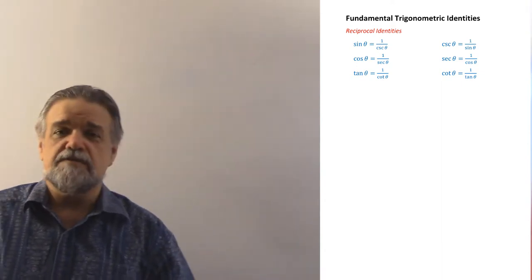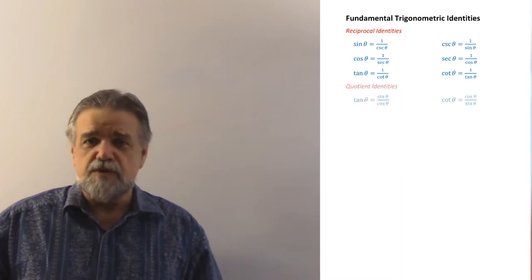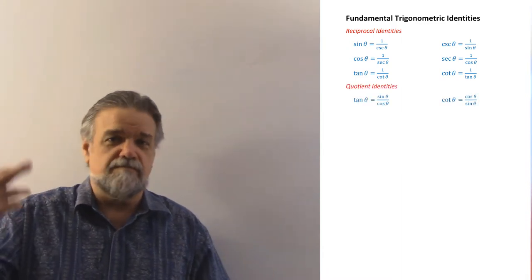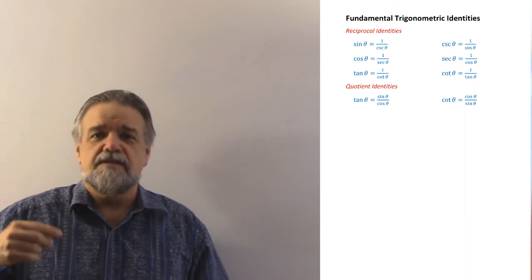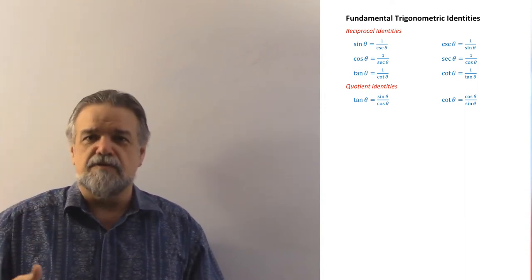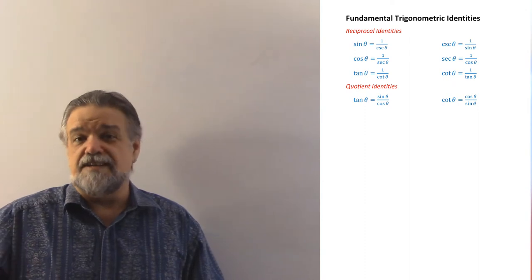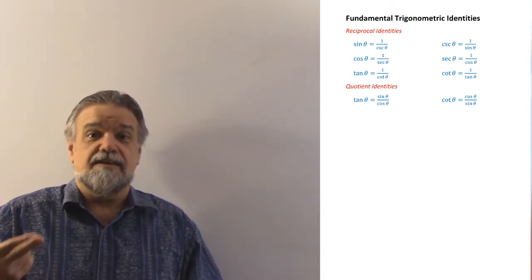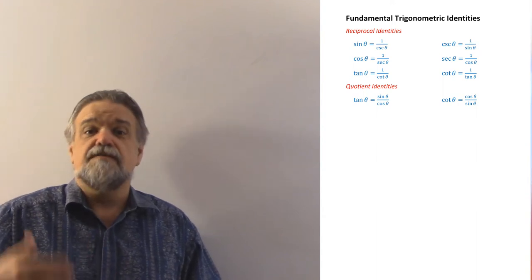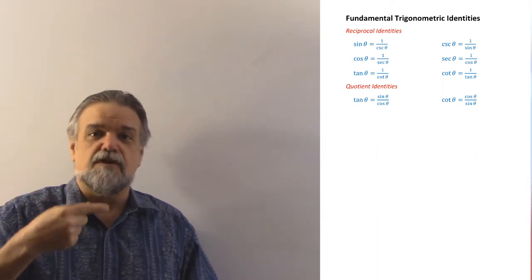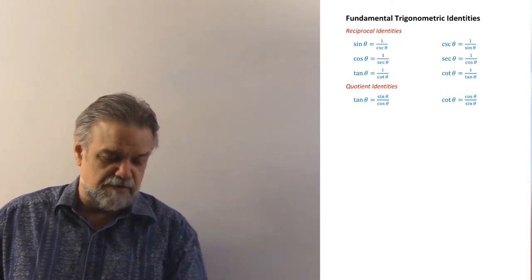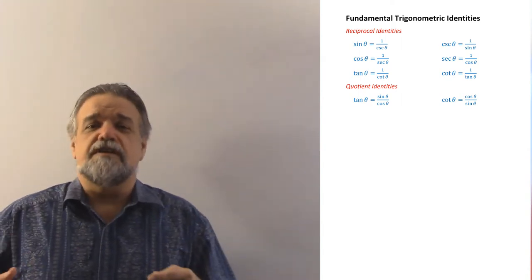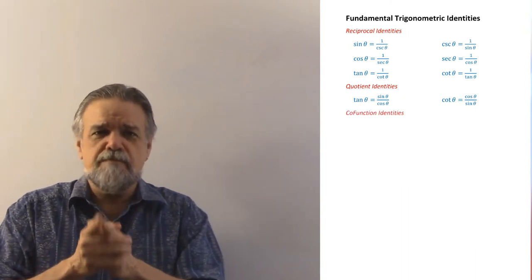The next ones are the quotient identities. You've also known these for a long time. The tangent of theta is the sine of theta divided by the cosine of theta. And if the tangent of theta is sine over cosine, and the cotangent is the reciprocal of the tangent, then the cotangent of theta must be the cosine of theta divided by the sine of theta — only stands to reason.